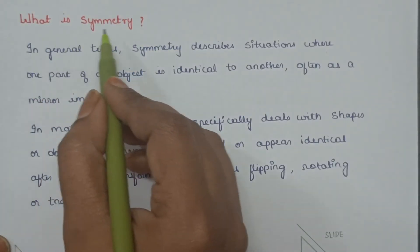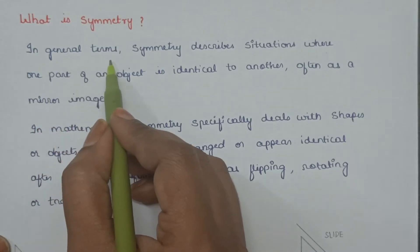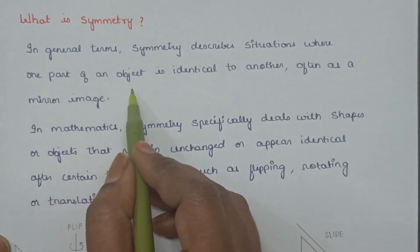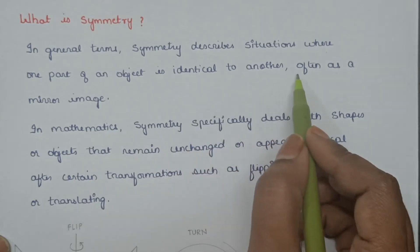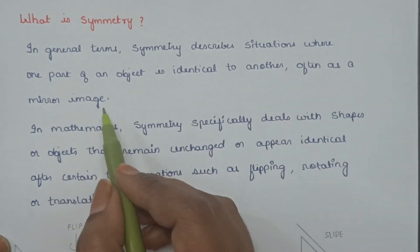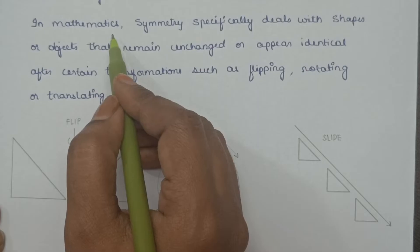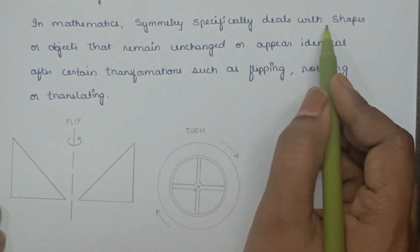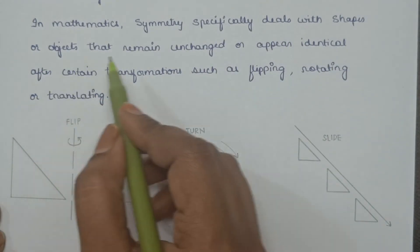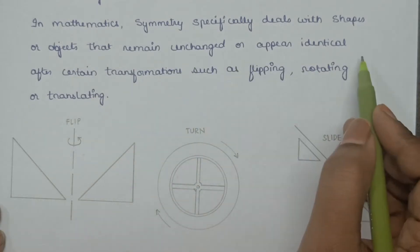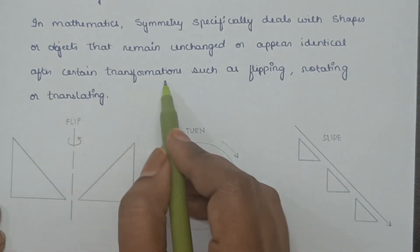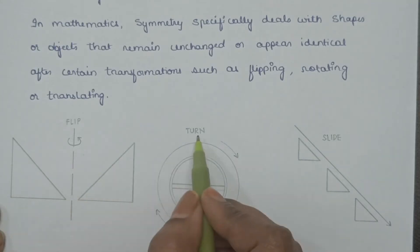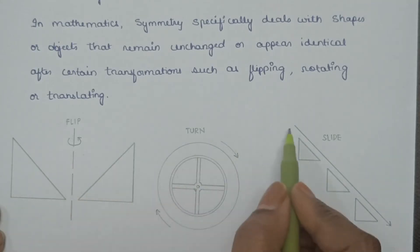What is symmetry? In general terms, symmetry describes situations where one part of an object is identical to another, often as a mirror image. But in mathematics, symmetry specifically deals with shapes or objects that remain unchanged or appear identical after certain transformations such as flipping, rotating, or translating.